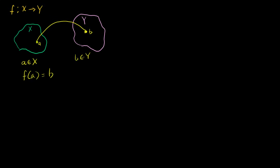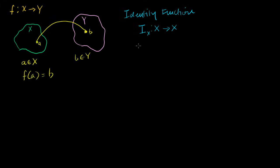Now I'm going to define a couple of interesting functions. I'll call it the identity function. This is a function I'll just call big capital I. The identity function operates on some set — so the identity function on set X is a mapping from X to X. What's interesting is that if you give it some a that is a member of X, the identity function applied to that member, I of a, is going to be equal to a. It literally just maps things back to itself. Visually it would look like a circle — it just points back to the point you started with, associating all points with themselves.